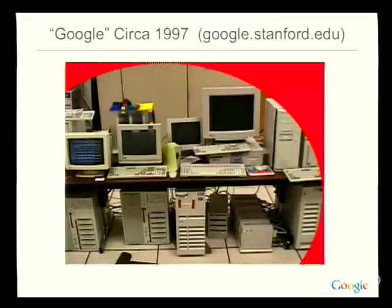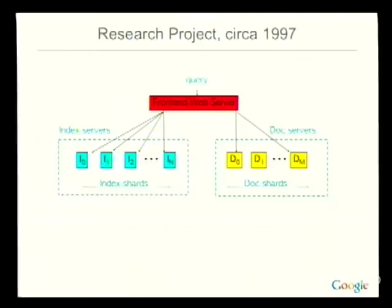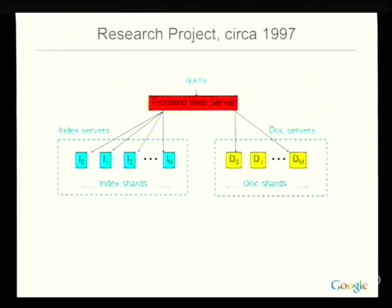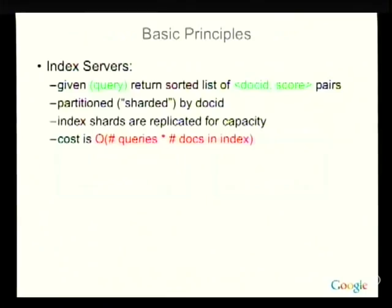The research project looked like this: you have a system that takes in a query received by a front-end web server. The index is divided into partitions by document, so each partition has some of the documents. You send a request to the index serving system for each partition; it computes the best results for its subset and sends results back. Doc servers are used to generate the actual title and snippets once you've decided which documents to put on a results page. The cost of index serving is essentially order: number of queries times number of documents.